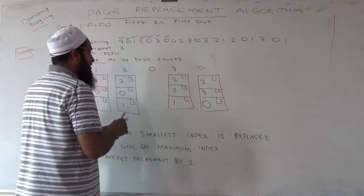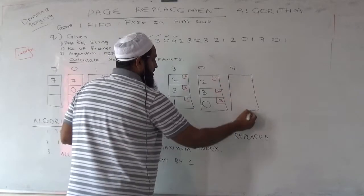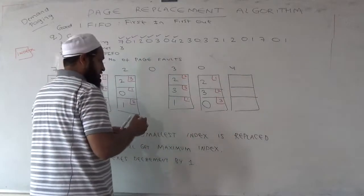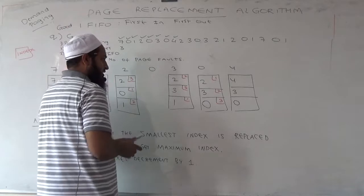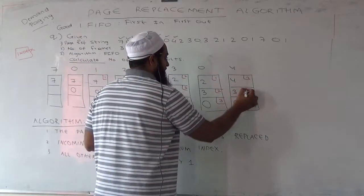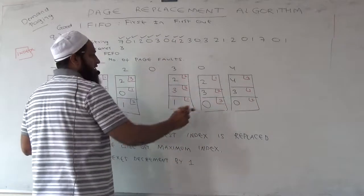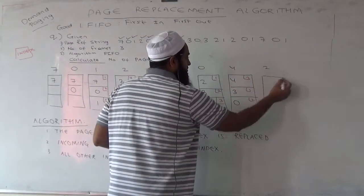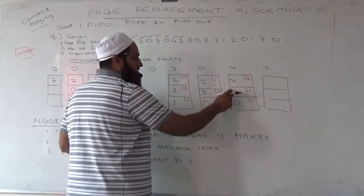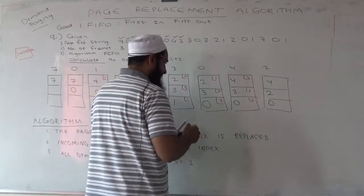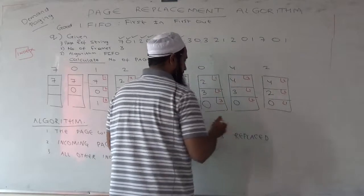Next, who's come? 4. Is it in memory? No, get it in memory. Who will go out? The smallest index — so 4 will replace 2. Remaining numbers as is, and the index of 4 will become 3, this will become 2, and this will become 1. Next, who's coming? 2. Is it in memory? Who will go out? Minimum index is 3 — so 2 will replace 3. Remaining as is, and the index of 2 will become 3, this becomes 2, and this becomes 1.